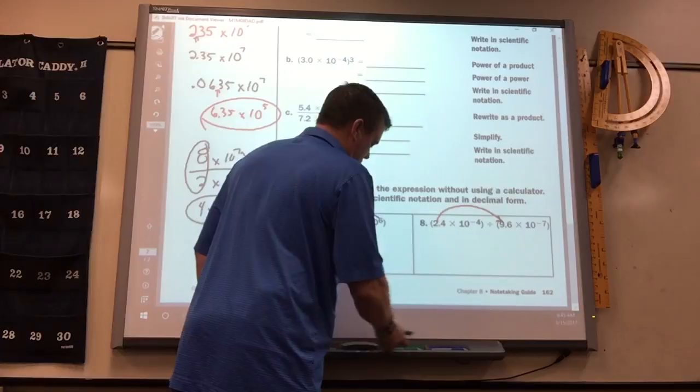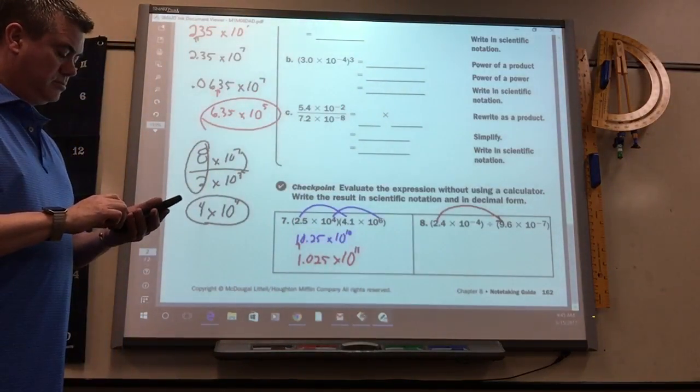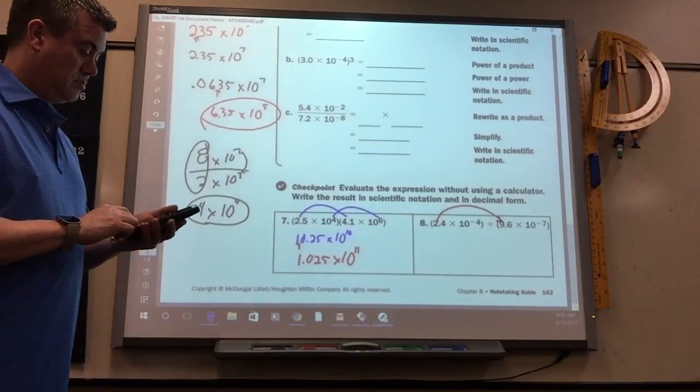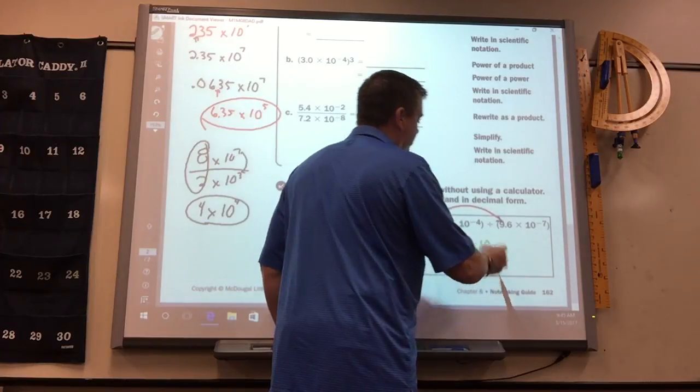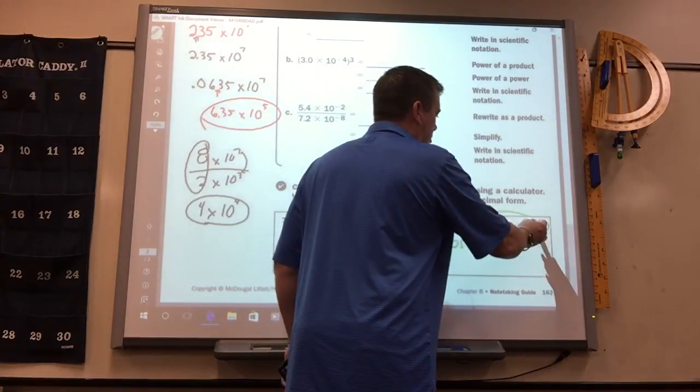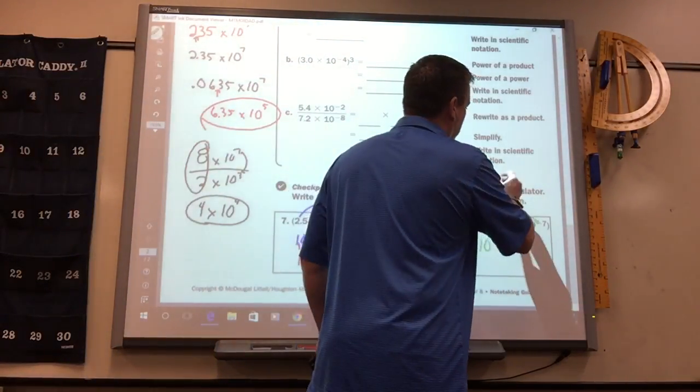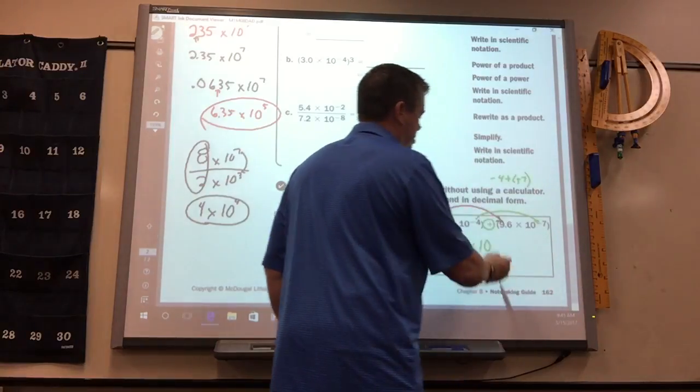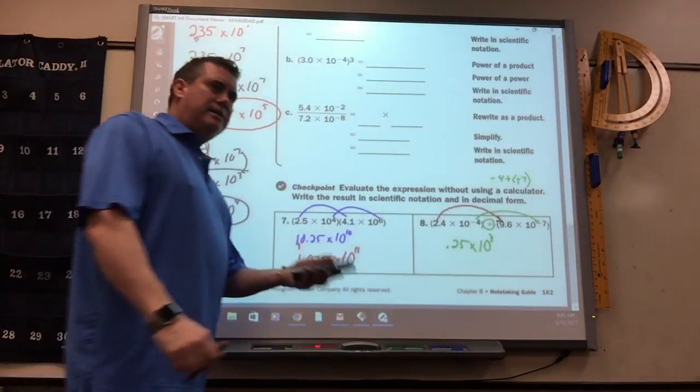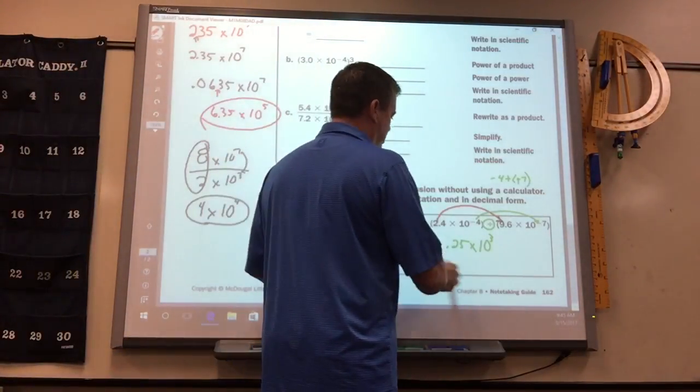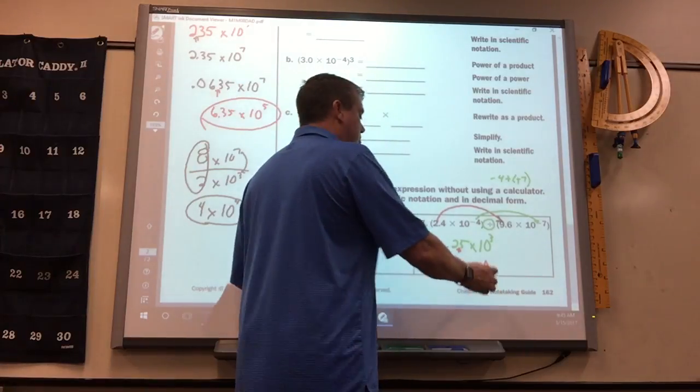Here, when you divide these two, you get 0.25 times 10. Now, remember what you do when it's a divide. You subtract. Negative 4, take away negative 7. It's 3. So, again, it's correct. It's just not scientific notation. So, the decimal should go there. And, it's 2.